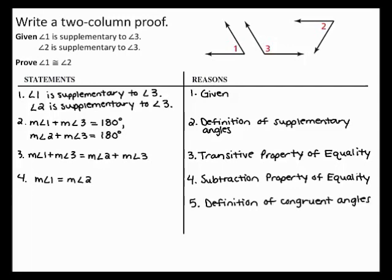Finally, by the definition of congruent angles, you can state that angle 1 is congruent to angle 2. This shows that angle 1 is congruent to angle 2, completing the two-column proof.